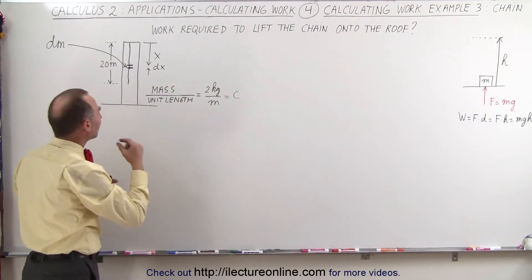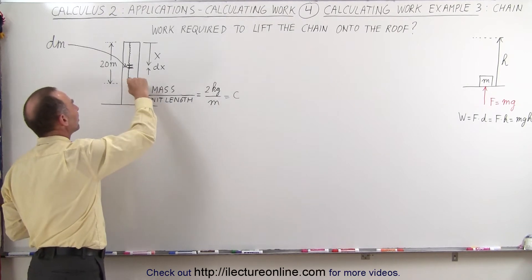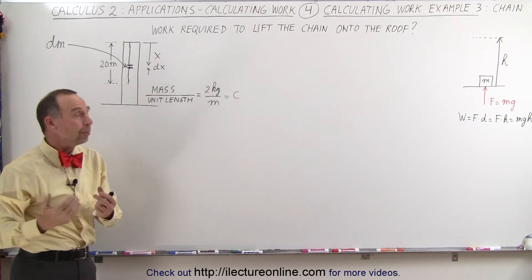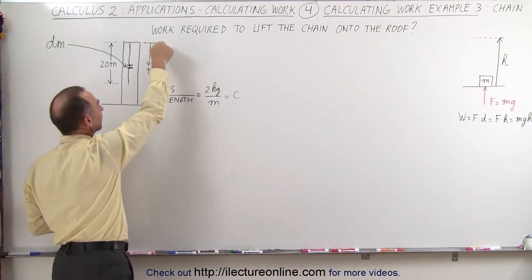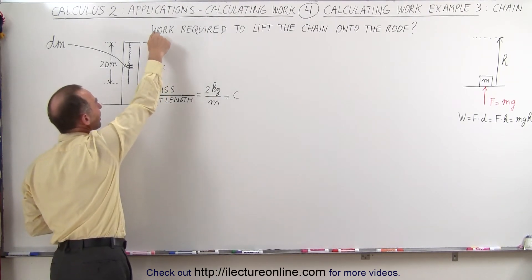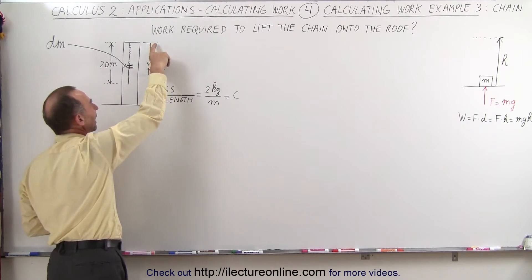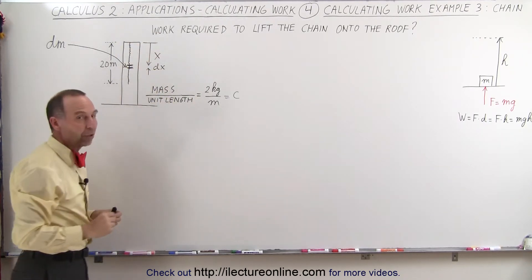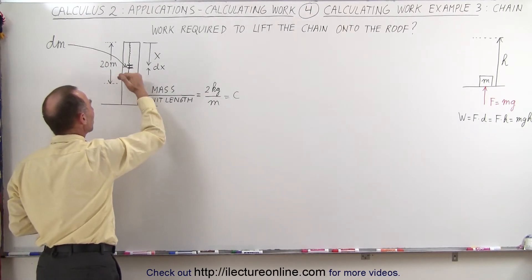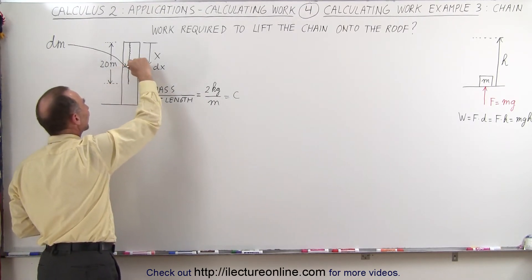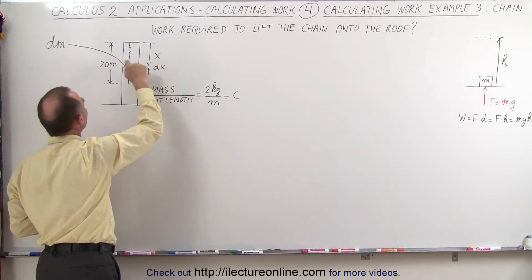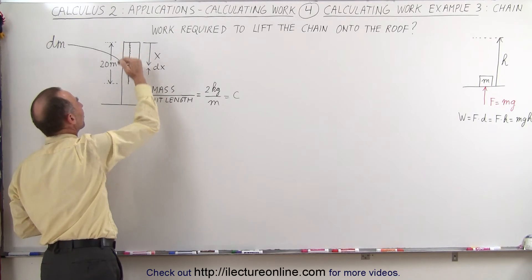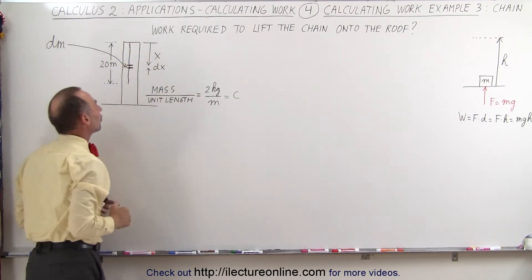But here we have to do it a little bit different because we're lifting different portions of the chain a different distance. Now it will help us if we use the coordinate axis x as being downward, so the greater x, the more amount of work it will take to lift that portion of the chain up. So what we're going to do is we're going to chop up the chain into small little pieces of length dx. All of them will have a small amount of mass dm, and we're going to lift every piece up from wherever it is to the top of the building.